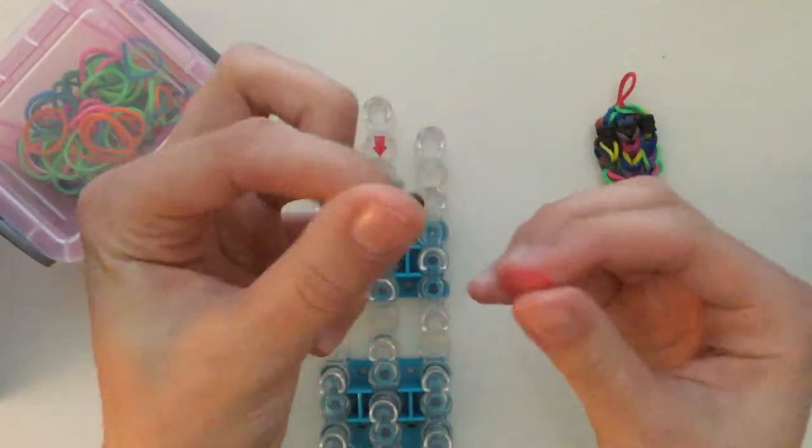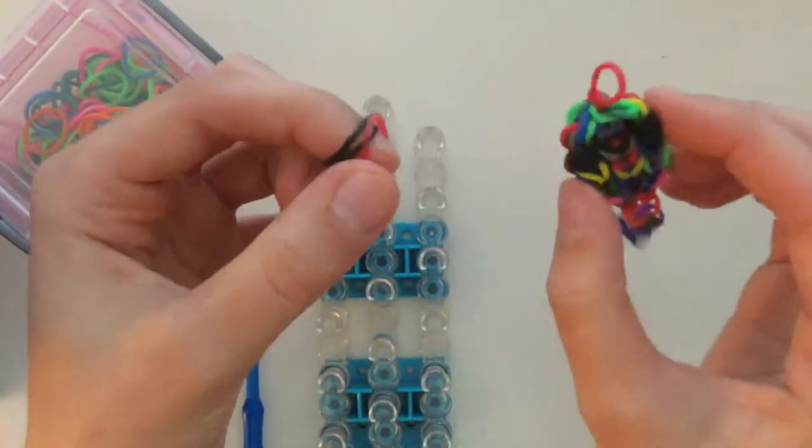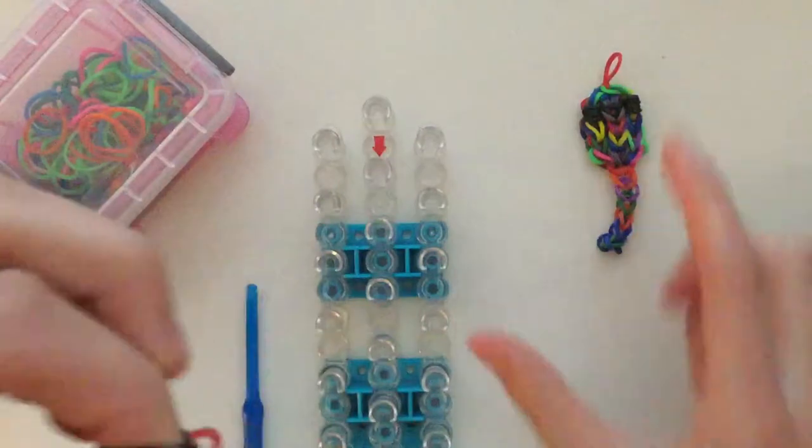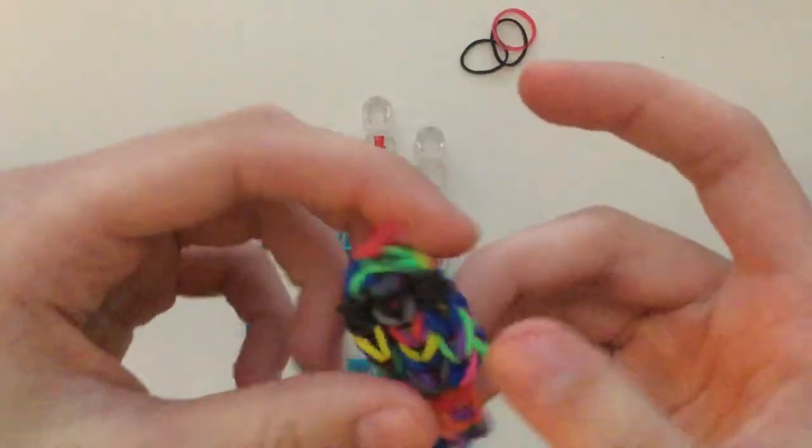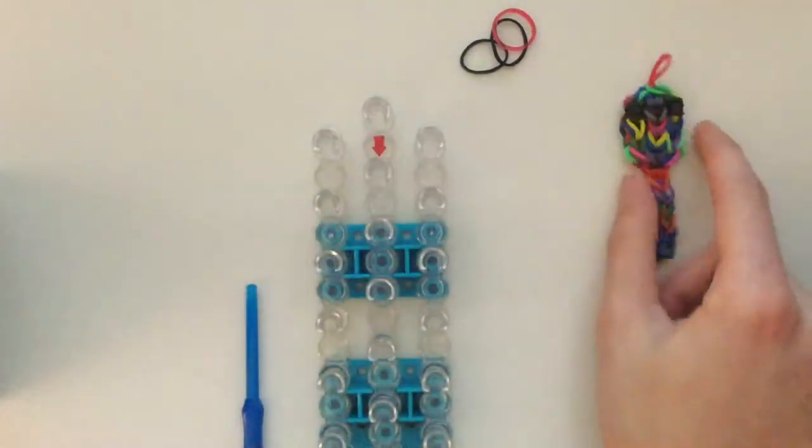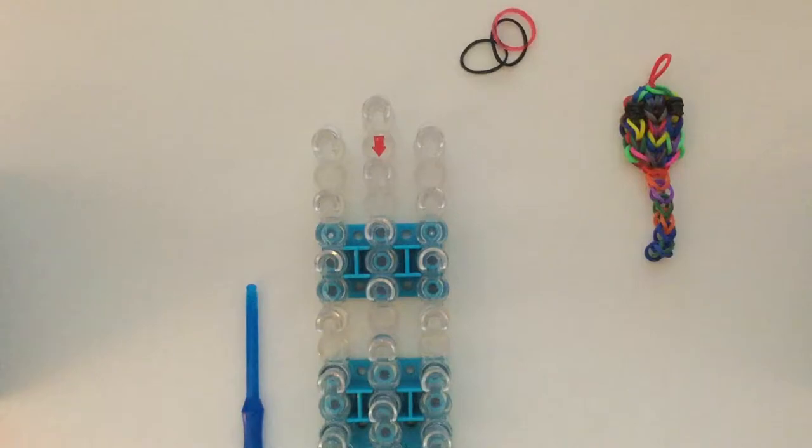The two black are going to be for the eyes, the one red band for the tongue slash slipknot band, and then the colorful bands for his body. When you're making the snake, I recommend you do not use any black bands in your mixture of colors, because it will blend in with the eyes. So, let's get started.